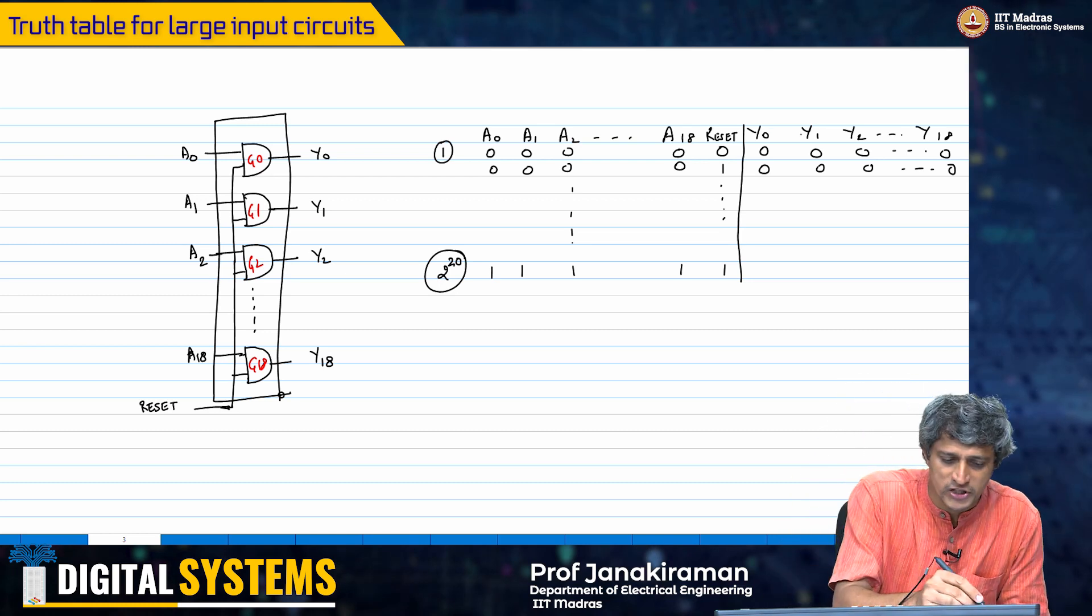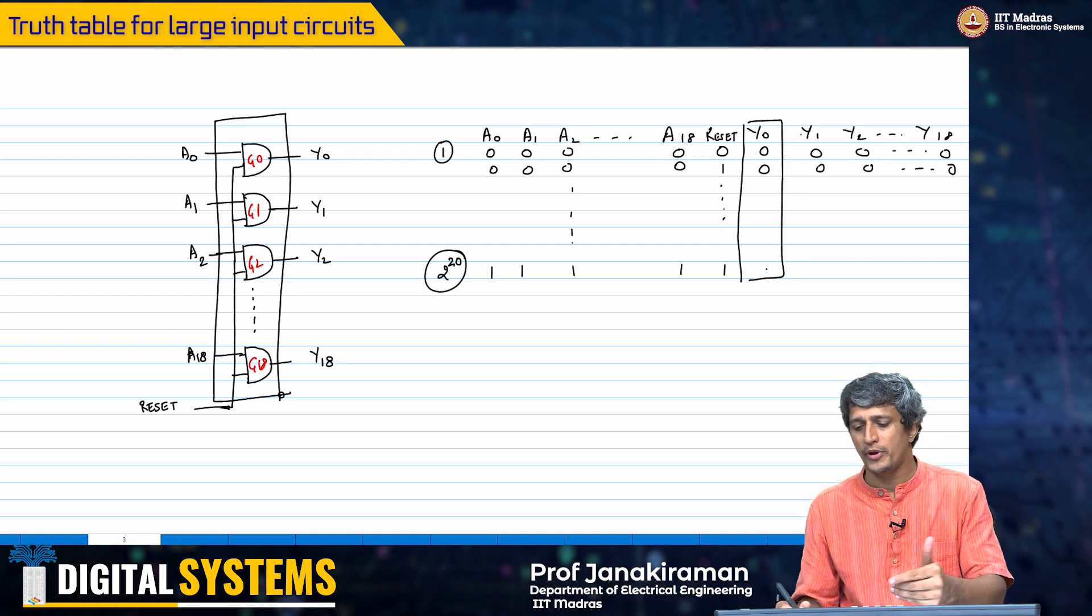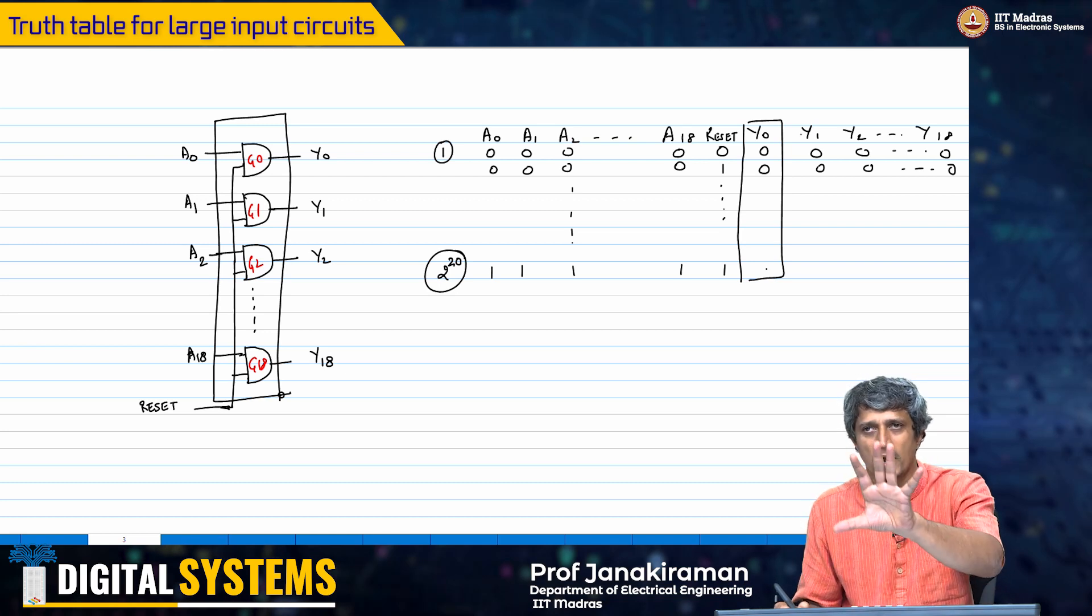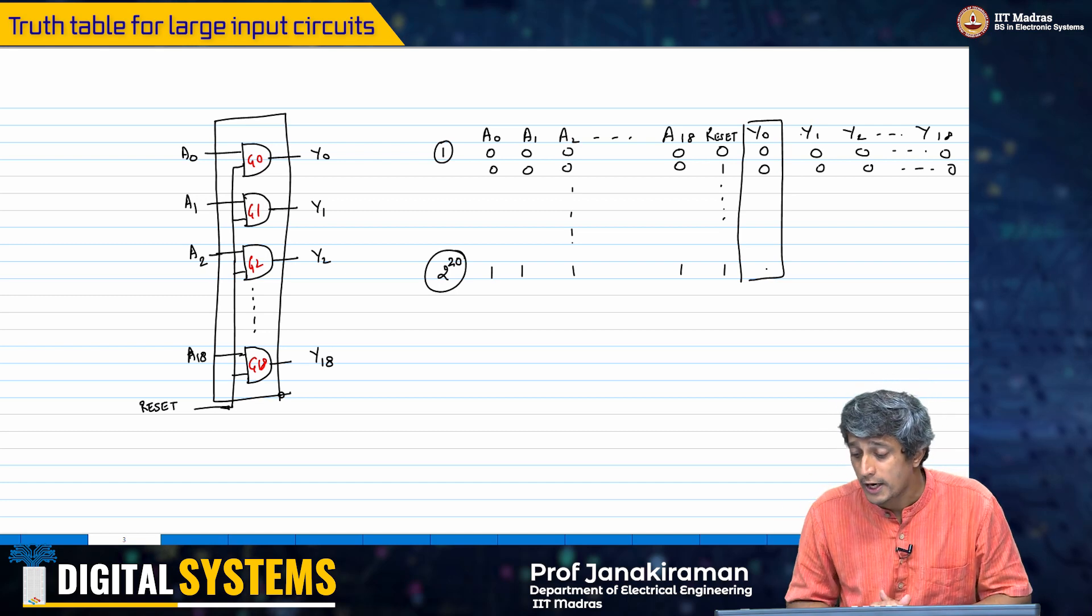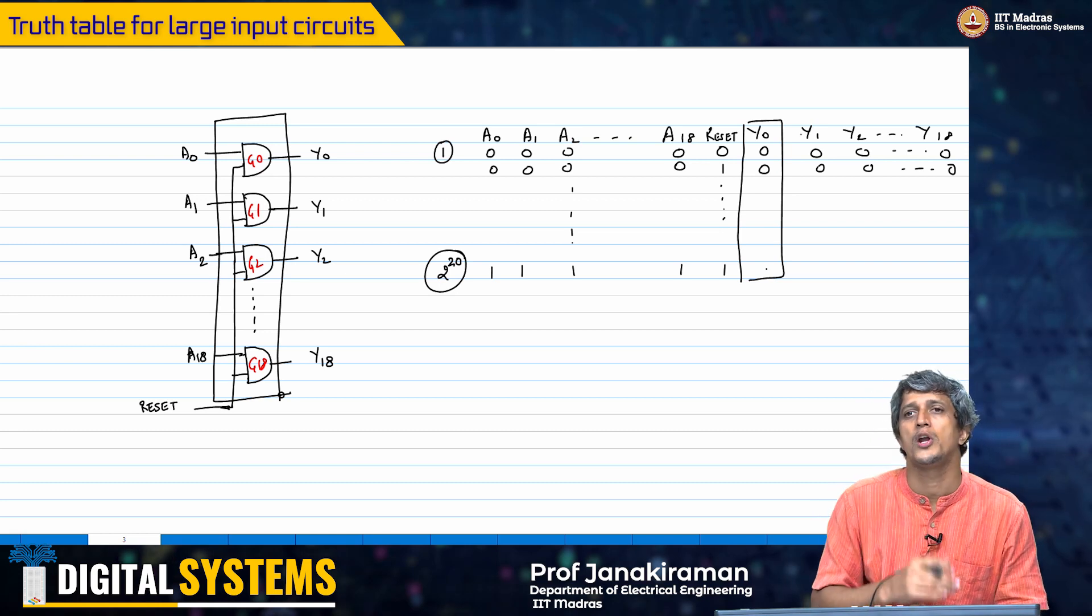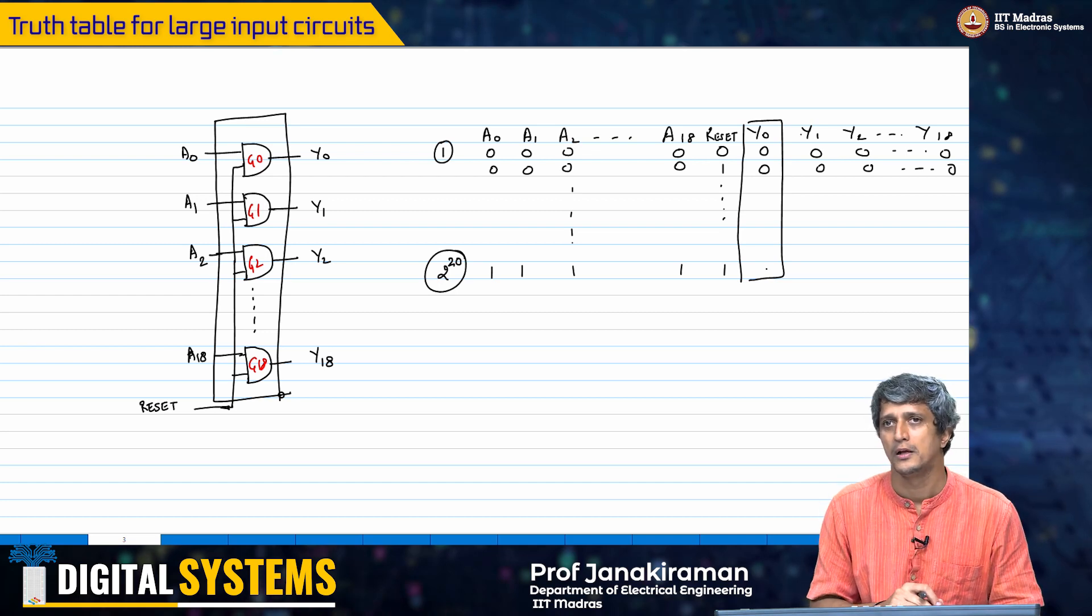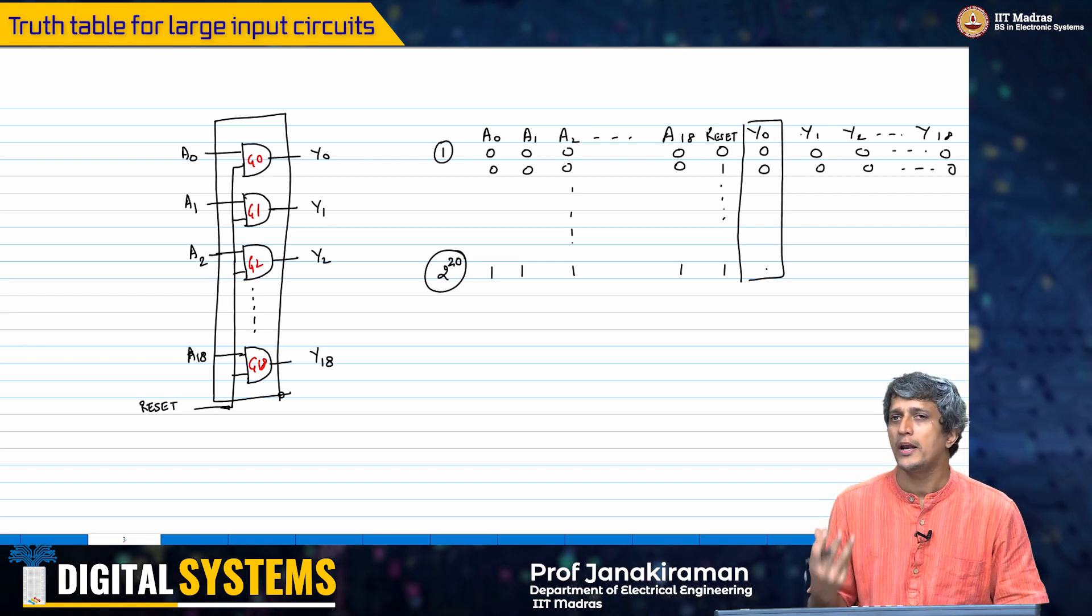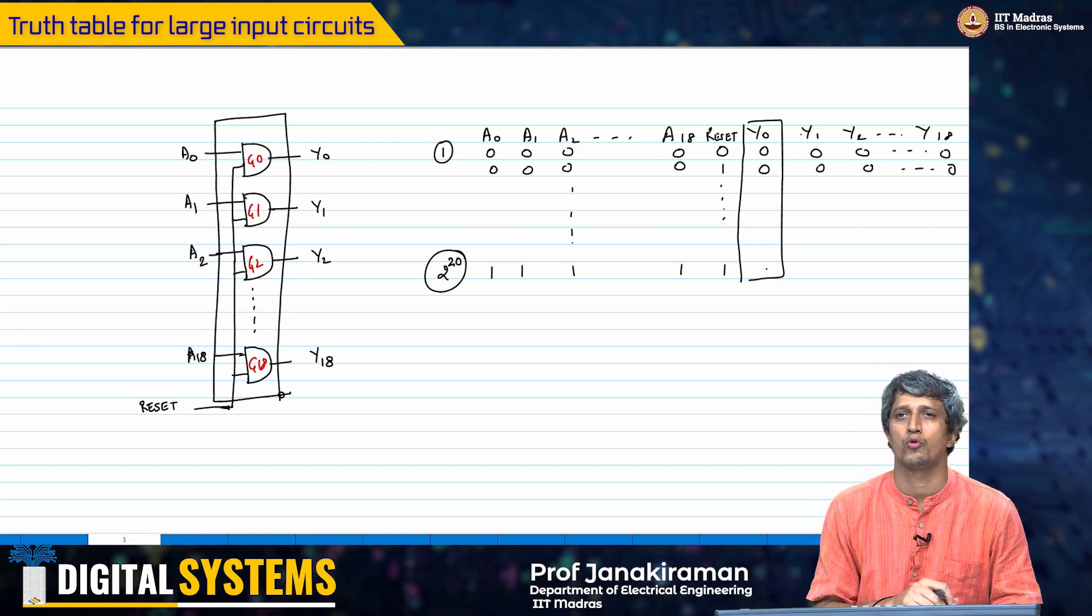But if I just look at the output Y here, for 2 power 20 combinations I will only see ones and zeros. There is a 1 here, there is a 0 here, all many zeros. So how do I figure out this piece of information that Y0 is dependent only on A0 and it is not dependent on A1, A2, A3, and so on? This is where we need to think of an alternate representation of the same information that we have in the truth table.